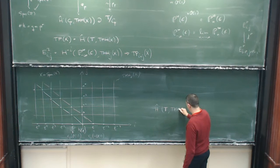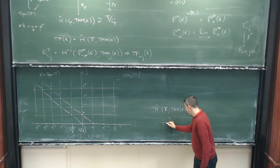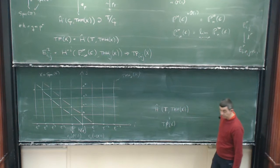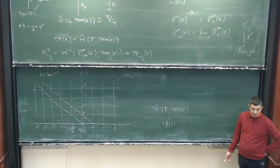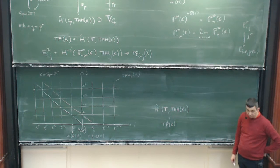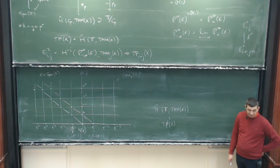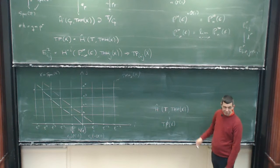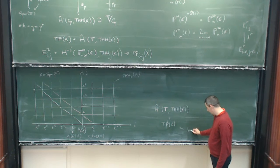So this by definition was TP. The reason I call this TP is because for the last 20 years, every time I met Kunz, he asked me how to define topological periodic cyclic homology. And then when I figured this out, I thought this is the right thing. But as I just explained, it's not periodic in general, so it's really not a great name. I think a better name is to call this a higher de Rham-Witt cohomology.